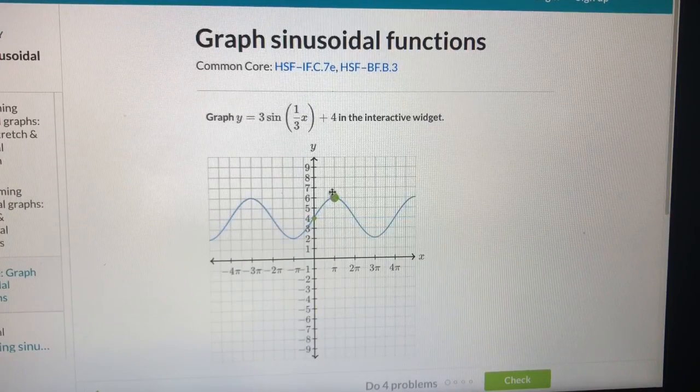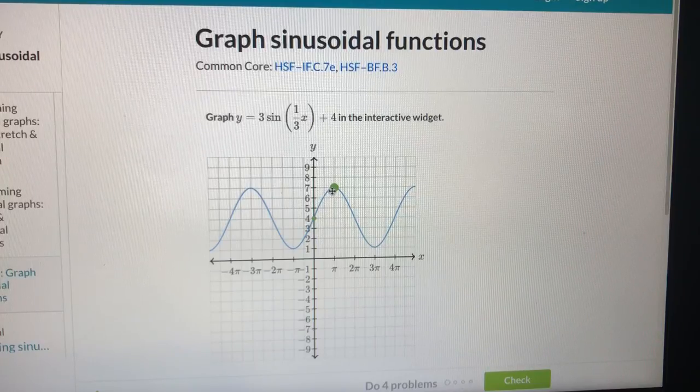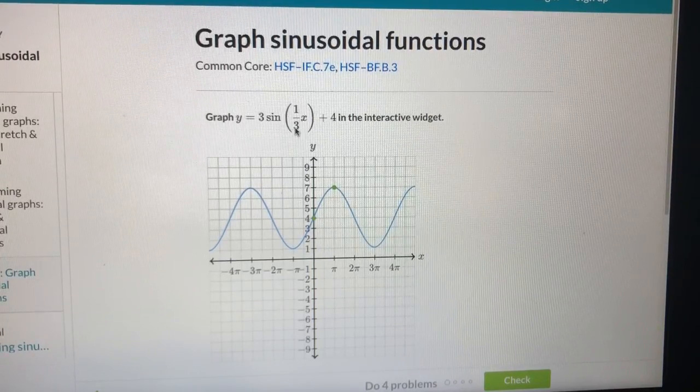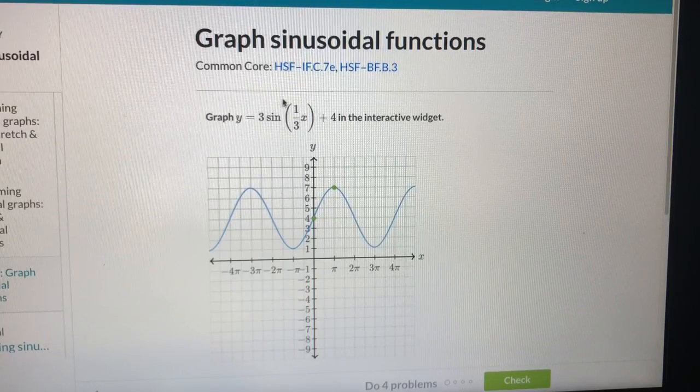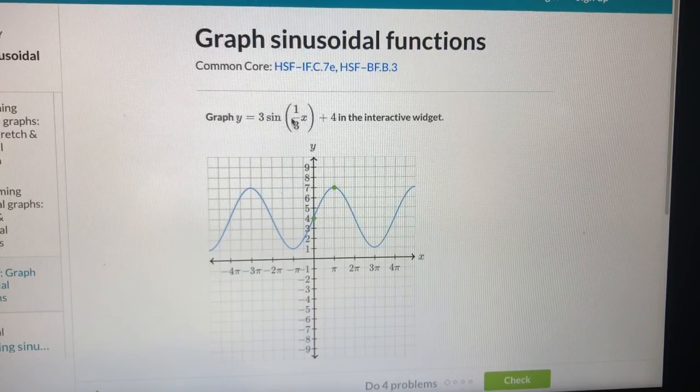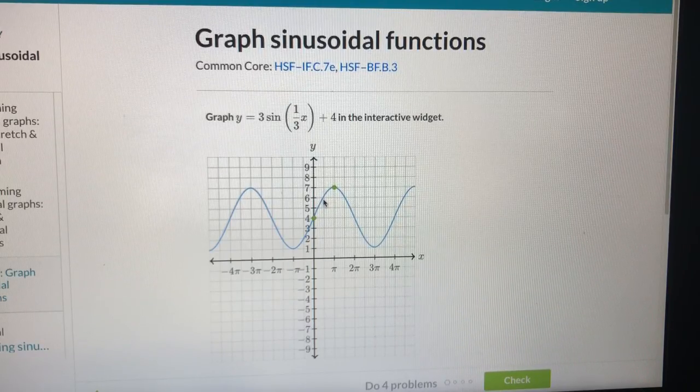1, 2, 3. Okay, so get these two distances fixed. And now I need to see the period. The period, how much is the period? It's 1 third of x. So the period is 6 pi.